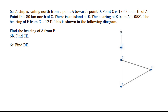Let's go to 6A. A ship is sailing north from point A towards point D. Point C is 178 km north of A. Point D is 80 km north of A. There is an island at E. The bearing of E from A is 58 degrees and the bearing of E from C is 124 degrees, as shown in the diagram. Find the bearing of A from E. From the information, we know AC is 178, AD is 80, this angle is 58 degrees, and this angle is 124 degrees.